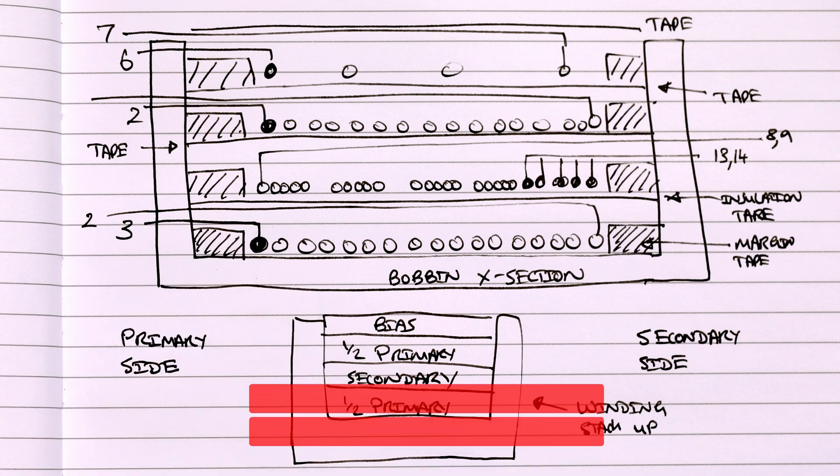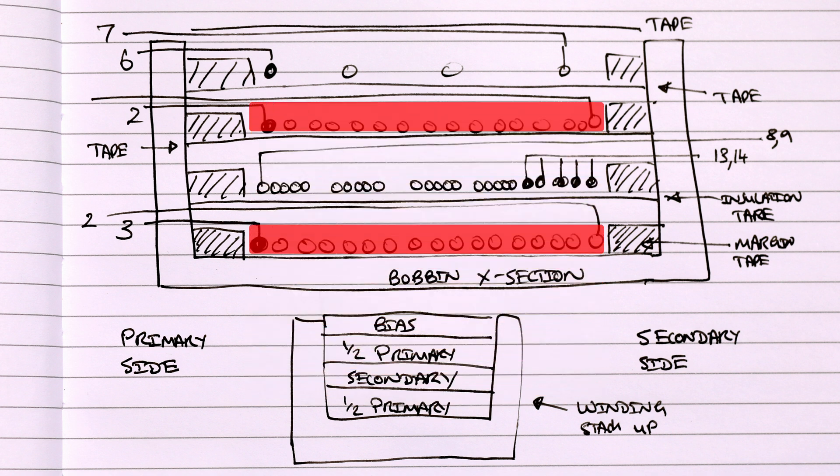As you can see, the primary winding has been split into two parts with a secondary sandwiched in between. This interleaved approach helps to reduce leakage inductance and keep efficiency high.